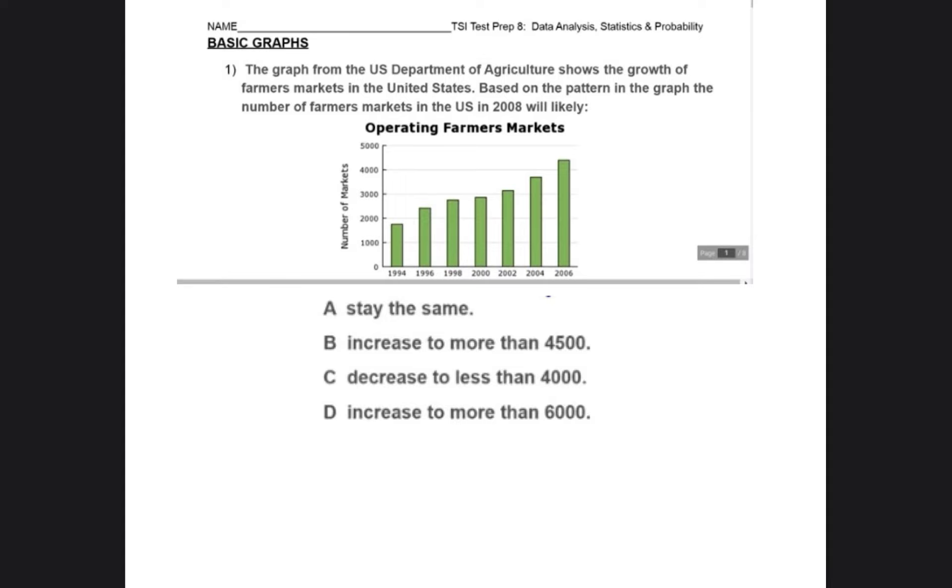So first it says, based on the pattern. So we're going to have to figure out what the pattern is so that we can figure out what's going to happen to the farmers markets in the U.S. in 2008. If I look down at my bar graph, I have 1994 through 2006. So we don't have 2008 on the graph. So they're wanting to know what will happen if we did have 2008 on this graph? What's most likely to happen?